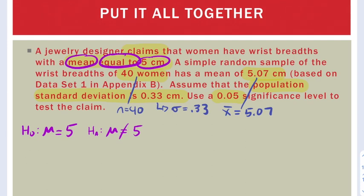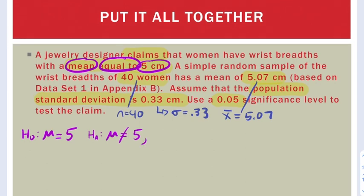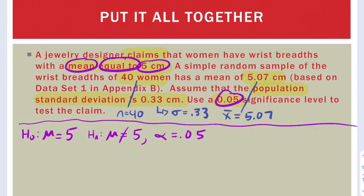Step two now is to find our significance level. Well, we were told that alpha equals 0.05. So there's our significance level. After finding the hypotheses and the significance level, it's time to find our z.